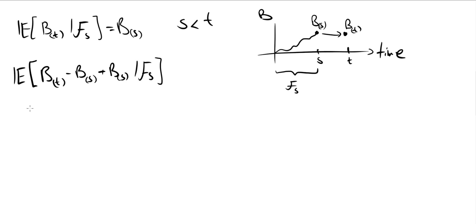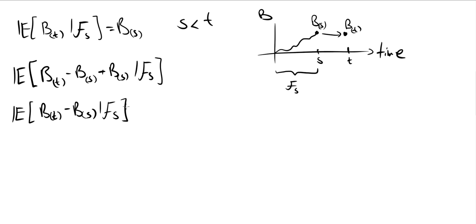We haven't changed anything yet — it's still B_T. Now we split it up into the expectation of B_T minus B_S given the filtration F_S, plus the expectation of B_S given F_S. Let's note two important things about each of these terms.